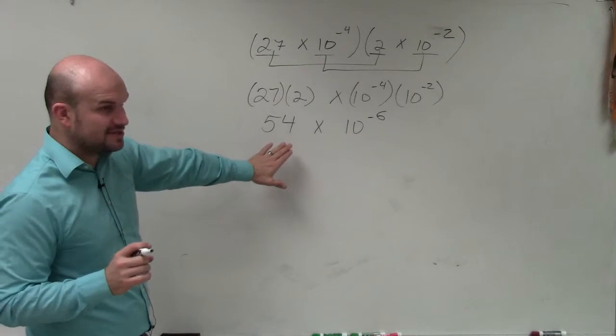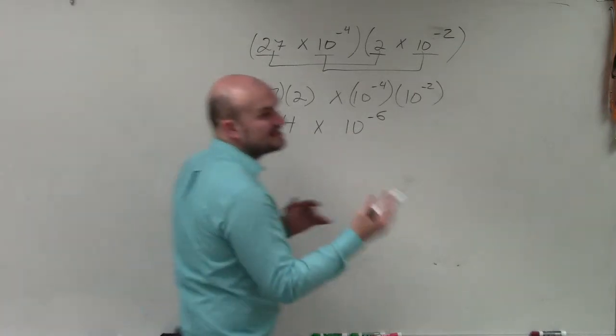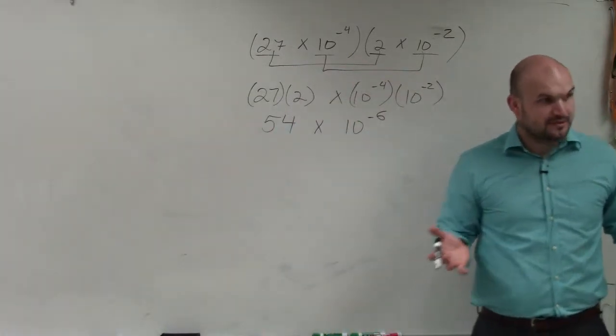Now, let's look at this answer. This is 54 times 10 to the negative sixth power. Correct?